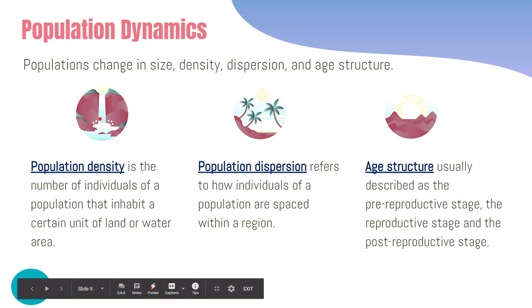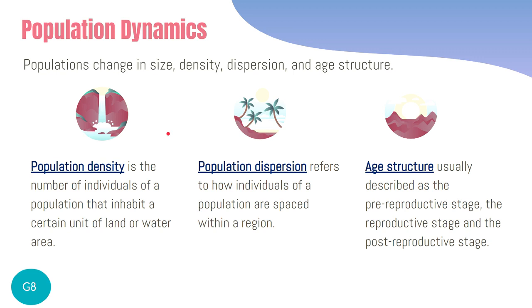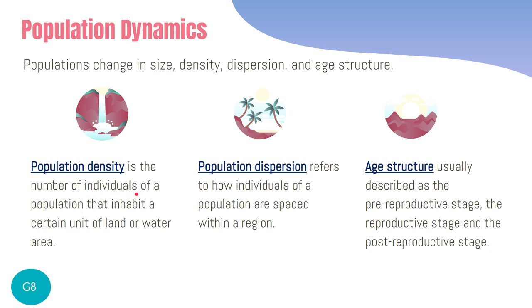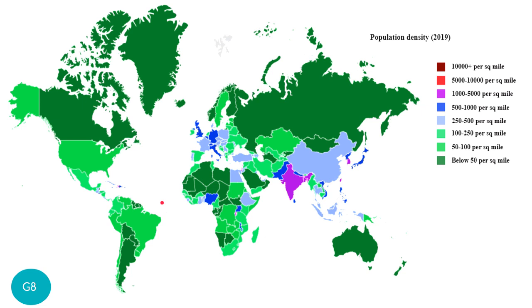When discussing population dynamics, we must be familiar with factors that affect it: population density, population dispersion, and age structure. Population density refers to the number of individuals of a population that live in a particular region or area. This world map shows the population density of humans as of 2019. Countries with below 50 humans per square mile include Australia, Russia, Mongolia, some parts of Africa, Greenland, and Canada.